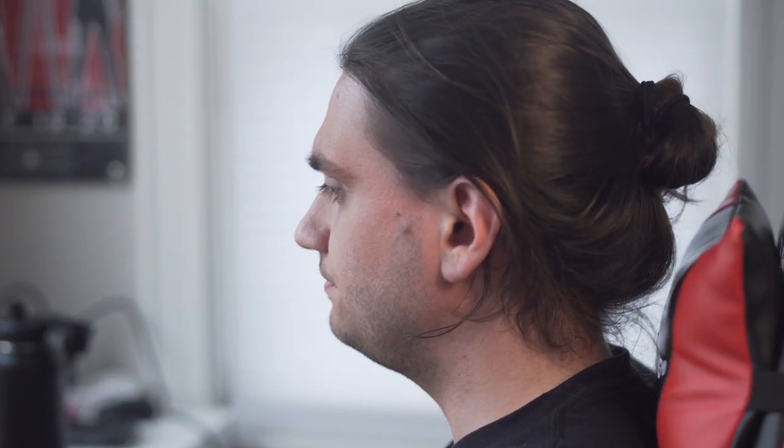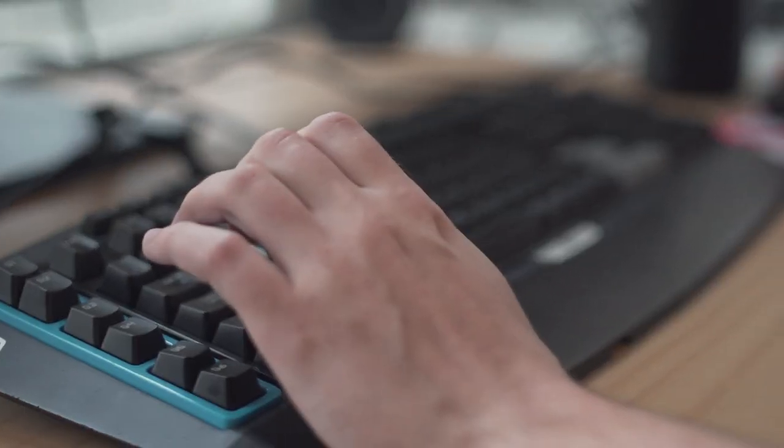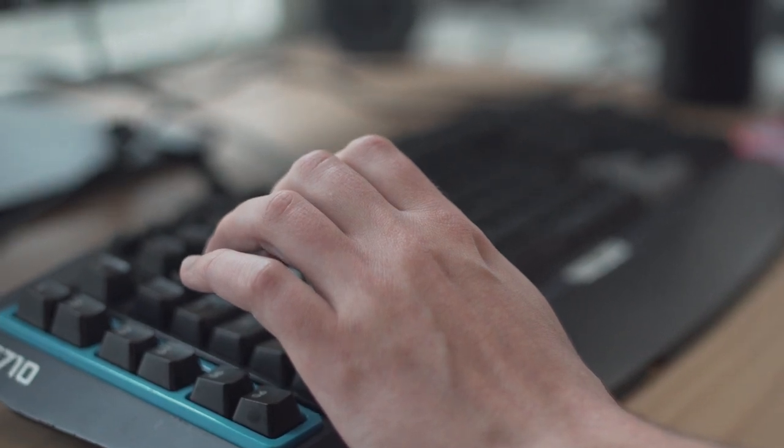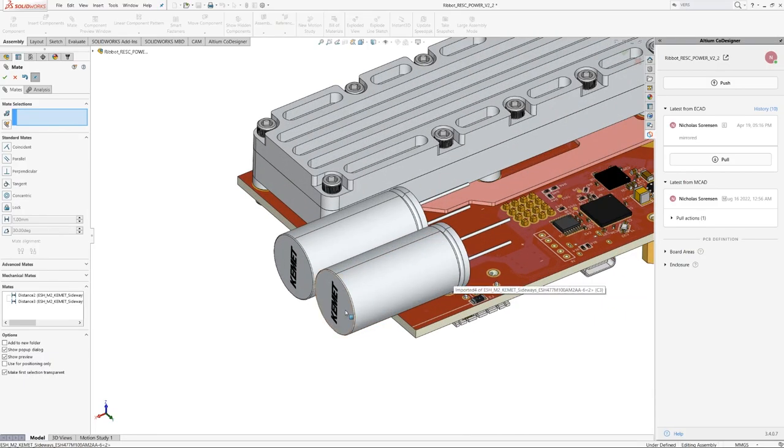While using co-designer, this is no longer a problem. And what's pretty cool is that I can actually constrain these parts using the geometry from the step file. And this is a pretty cool way that I can communicate to Nick where the capacitors need to go in a way that might be tough to convey otherwise.